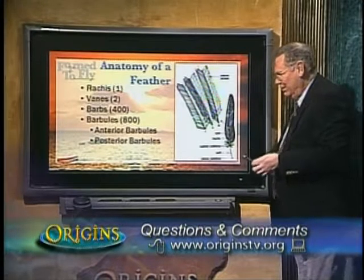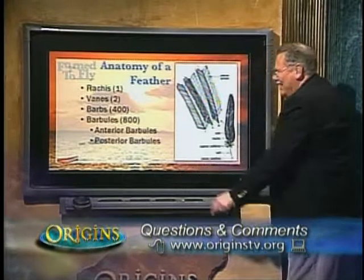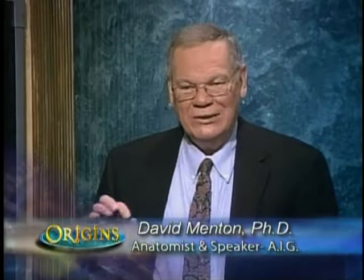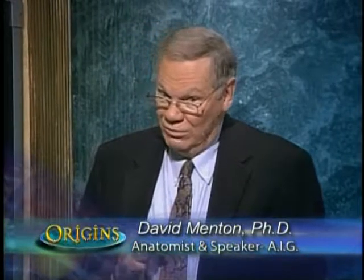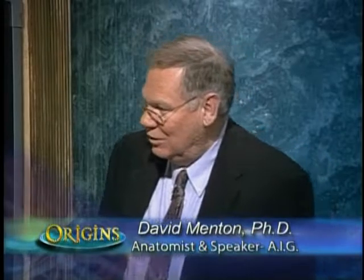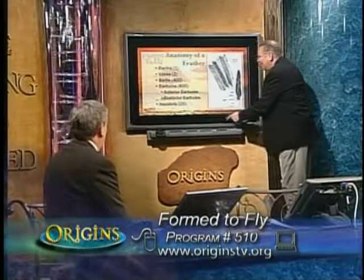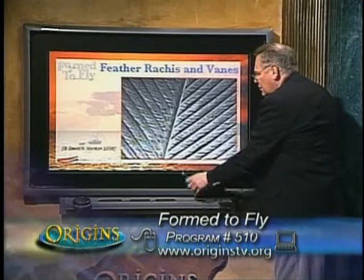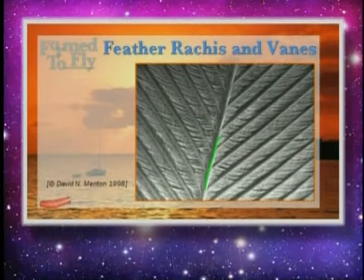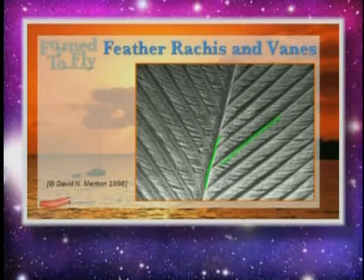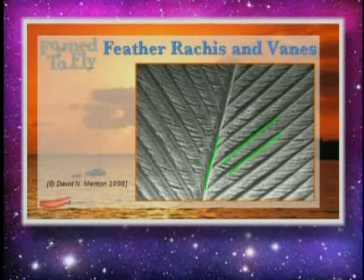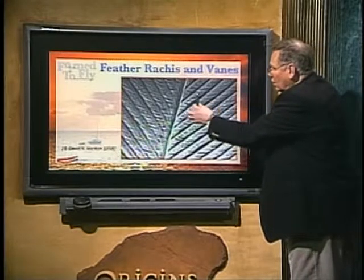There's a difference between barbules pointing toward the tip — anterior barbules — and those pointing toward the base — posterior barbules. The anterior barbules have little hooks, approximately 20 hooks each. These hooklets are the Velcro that holds the feather together. Birds had Velcro first, and it's a far more exquisite form than anything we can manufacture.